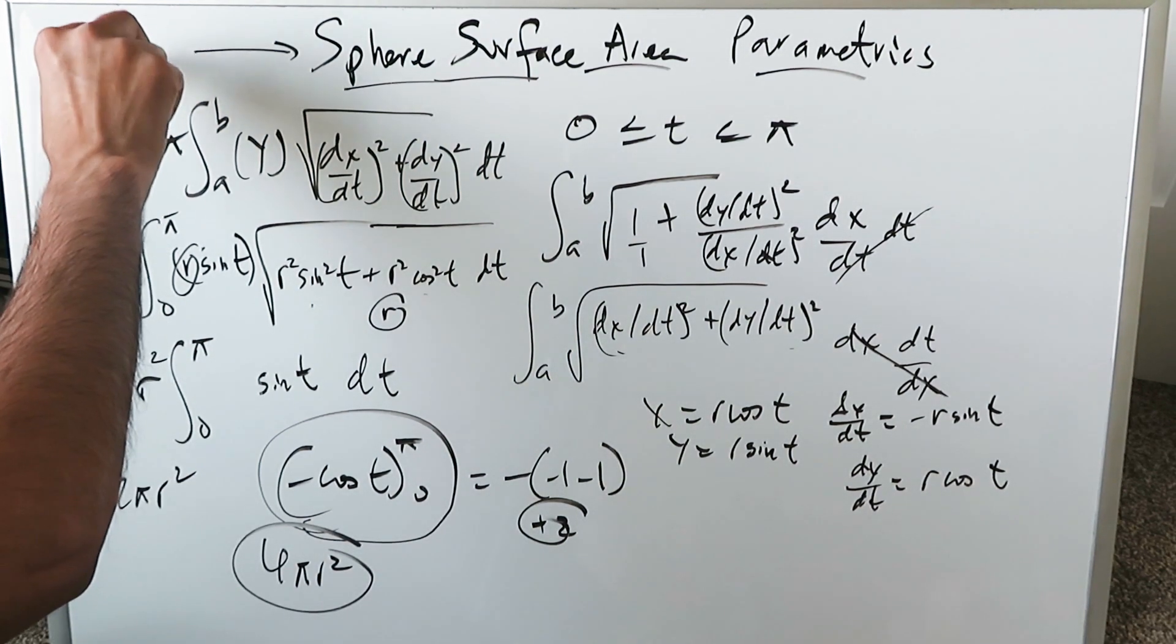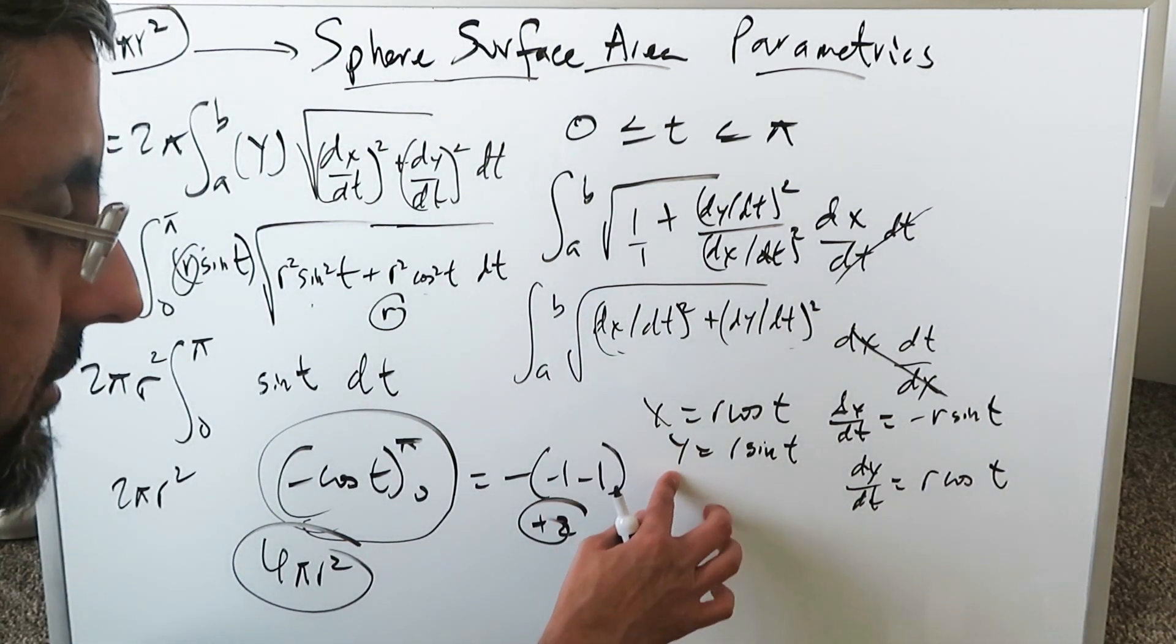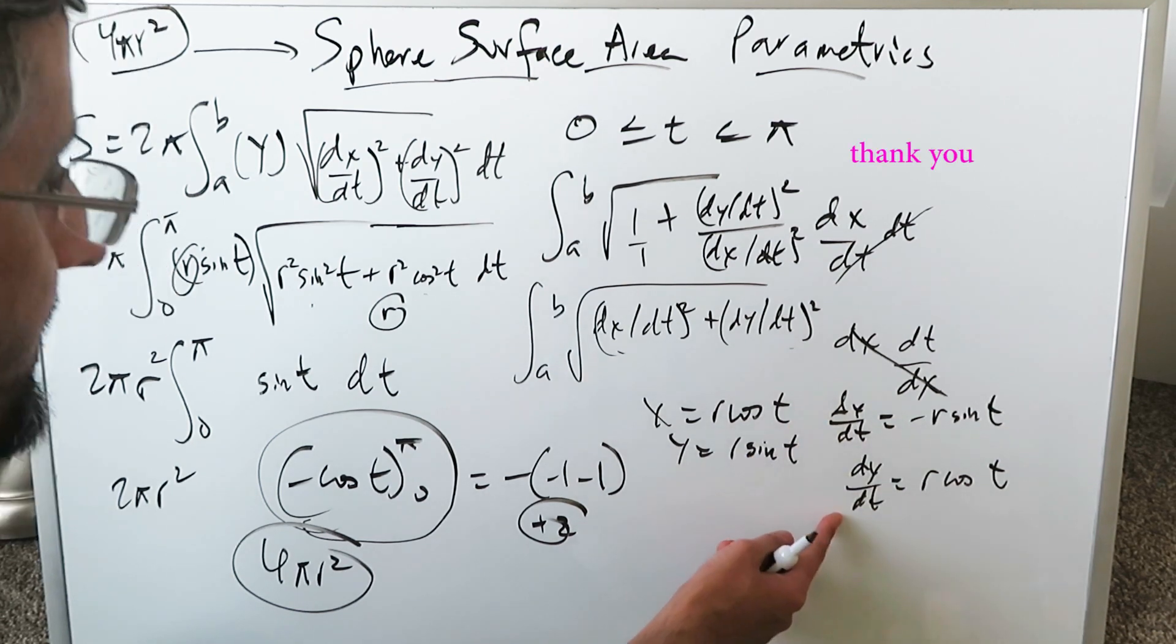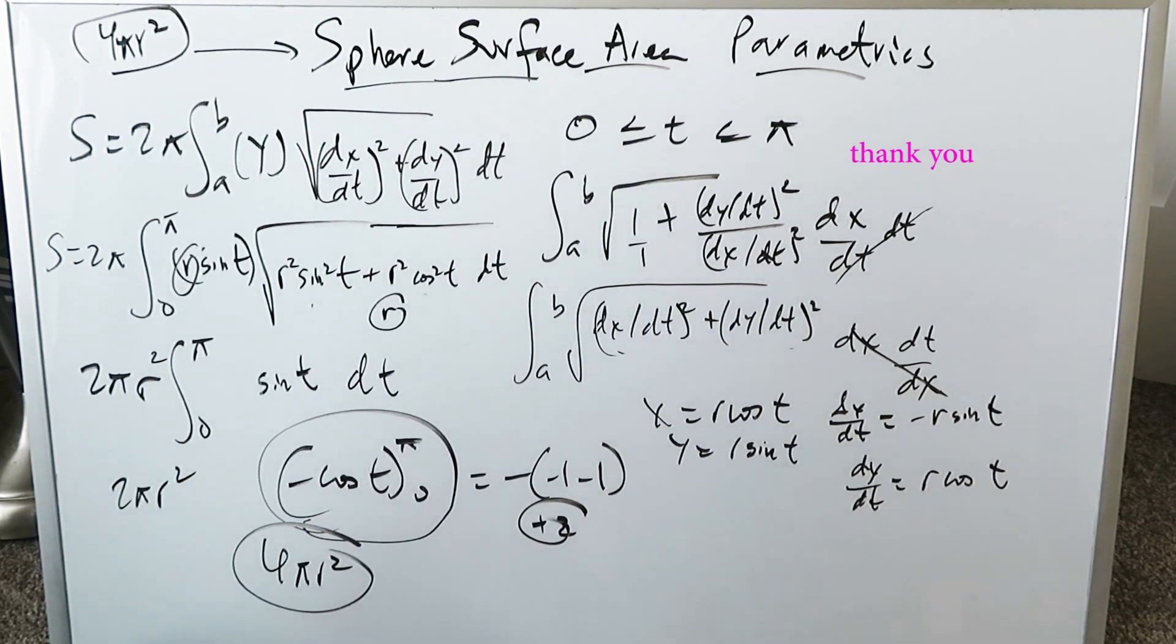The surface area has been determined by using parametric equations where the parameter was t. And you've seen it: x, y from the unit circle, their derivatives. The original arc length formula being modified to include the parameter and then the surface area formula coming into play and our end result. Thank you. Have a good day.